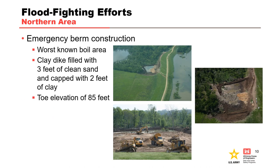In the northern area, the decision was made to construct an emergency berm on the land side of the levee to increase the weight of the land side soil block. The berm consisted of a perimeter clay dike with the interior filled with a minimum of 3 feet of clean sand capped with 2 feet of clay. The exterior of the berm was covered with a 10-foot wide and 2-foot thick layer of stone, with the toe of the berm having an elevation of 85 feet, 5 feet above the original ground surface.